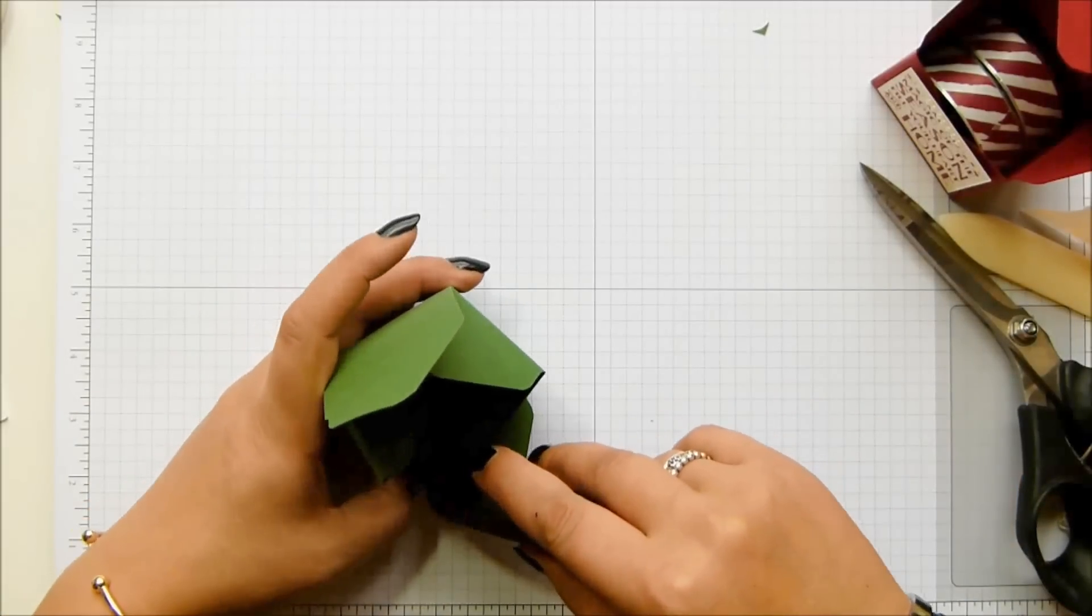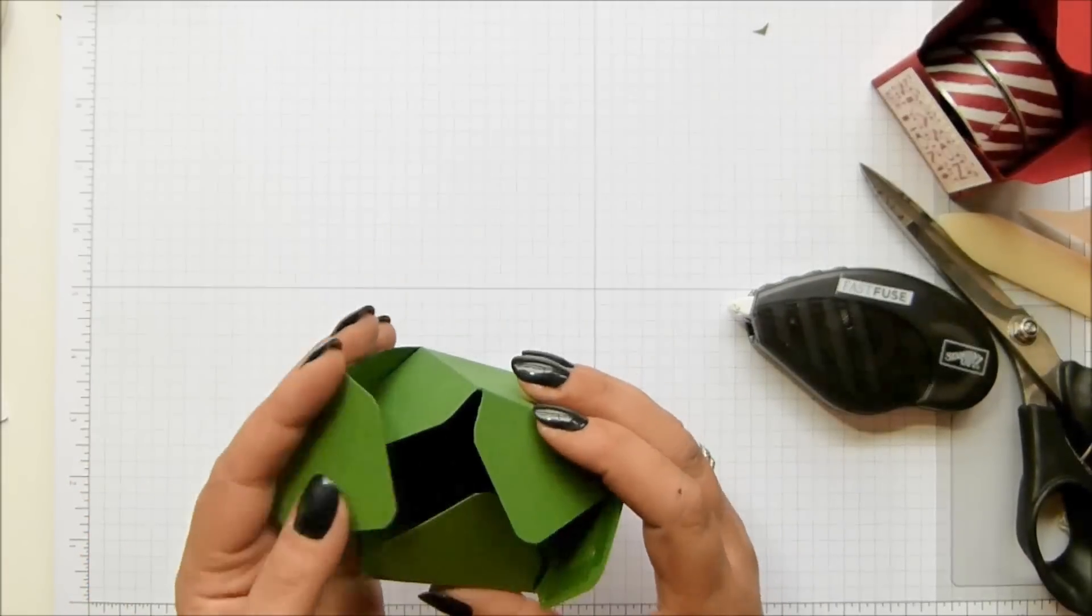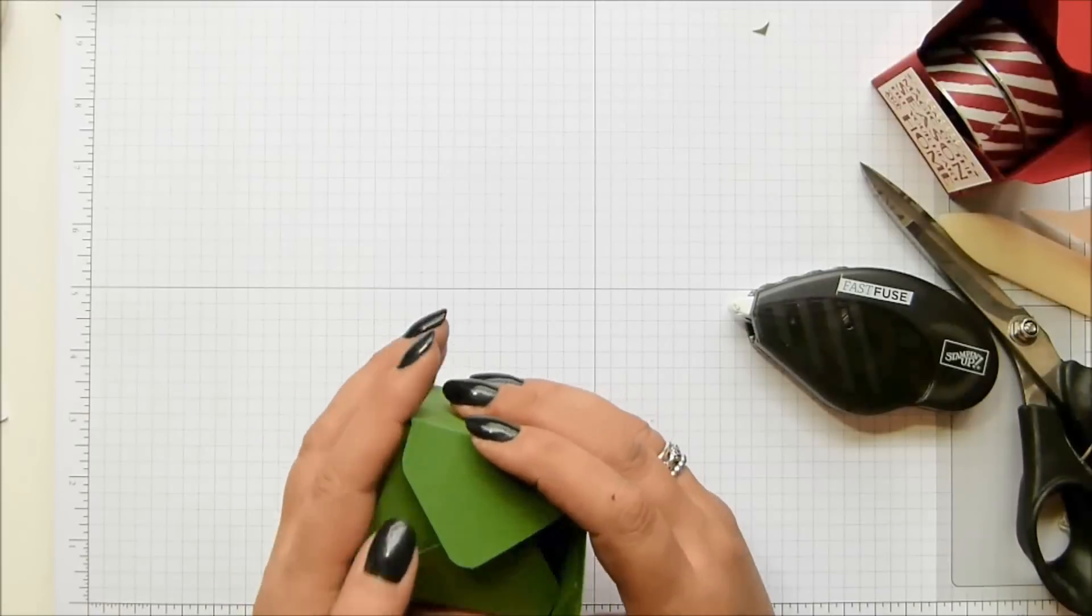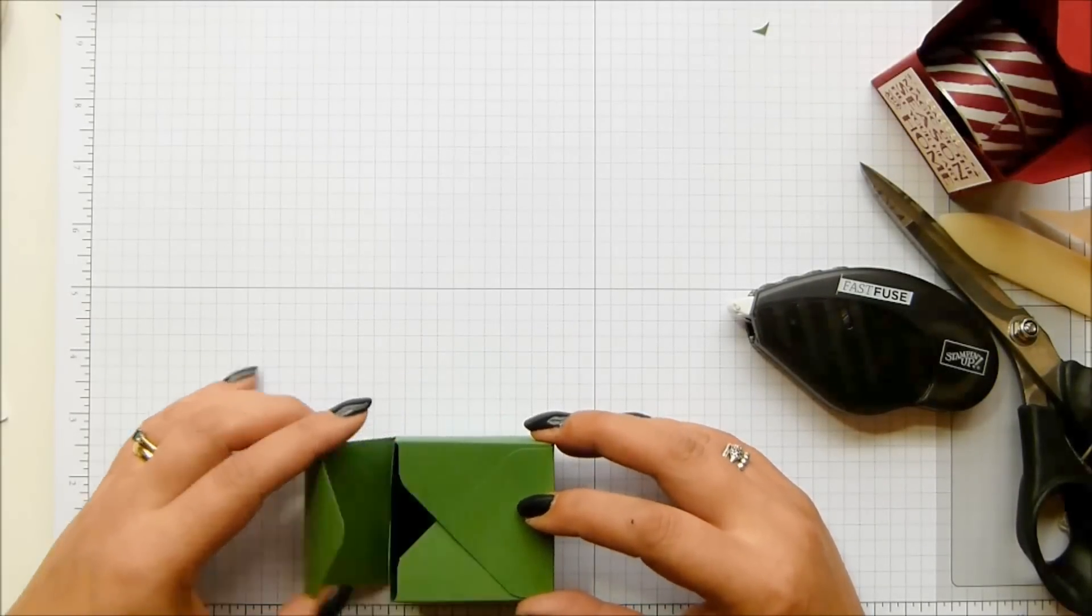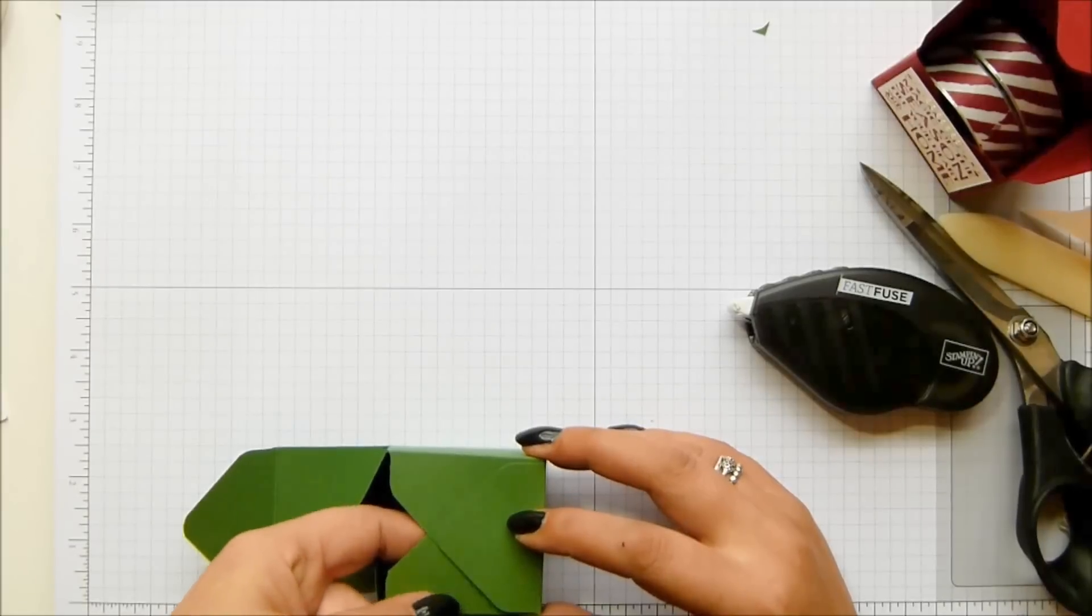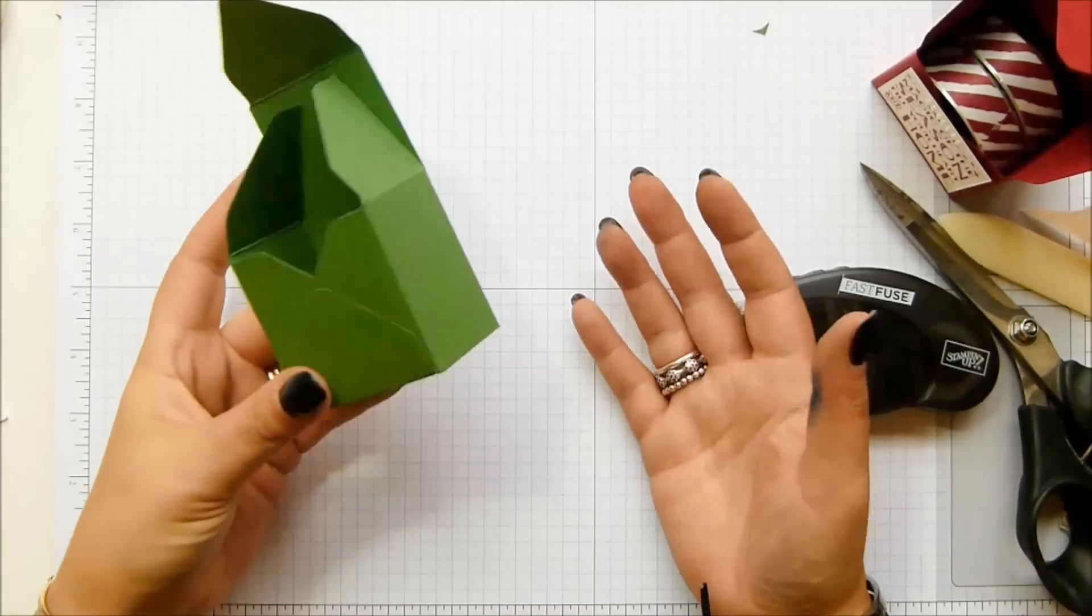So I need to run some adhesive along here as well. I can't get into it. There we go. So you just line it up and it's often easier if you actually close this part of the box and then you know you're going to get it all lined up. There we go. I'm just going to put my fingers inside. So that actually is your box made.